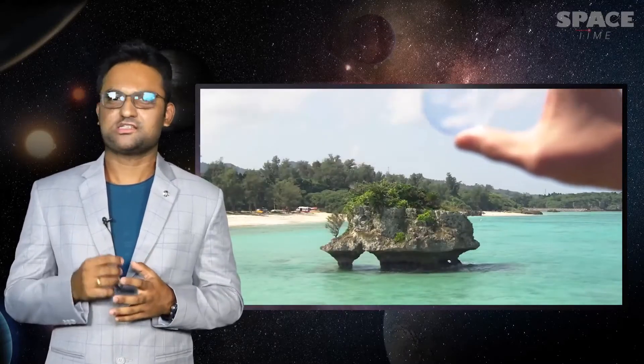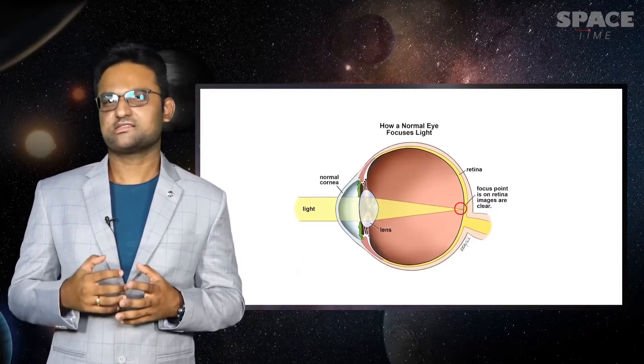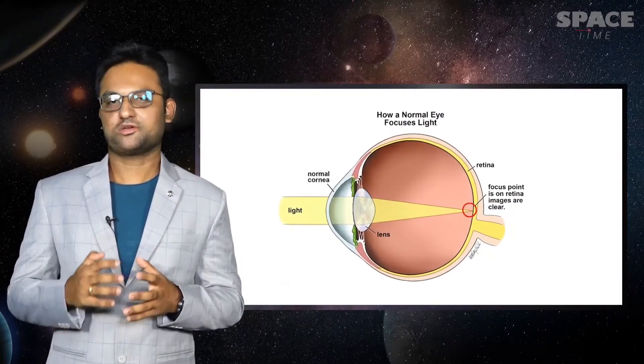But our eyes cannot see this image as the converged light at the focal point is not parallel, because the lens inside our eyes is designed to focus parallel rays to form an image on the retina.